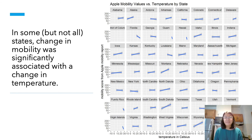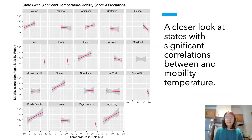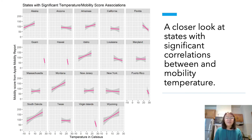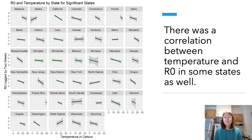This graph shows the Apple mobility values versus temperature by state. We can see that in some states, a change in mobility was significantly associated with a change in temperature. This shows only the states which had significant correlations between mobility and temperature. Interestingly, cold states such as Arkansas and Montana showed that when the weather got warmer, people went out more. However, in warm states like the Virgin Islands, Puerto Rico, and Hawaii, when the weather got warmer, people went inside. There was also a correlation between temperature and R-naught in certain states — as temperature increased, R-naught generally decreased, though this trend was not uniform across all states.